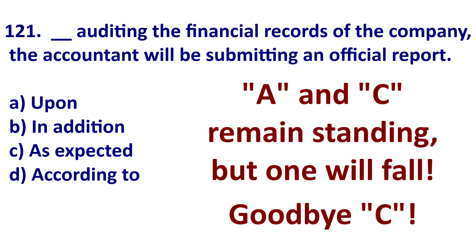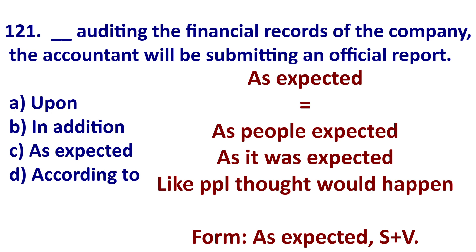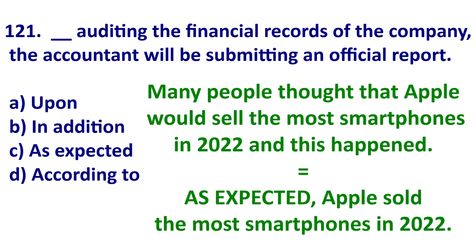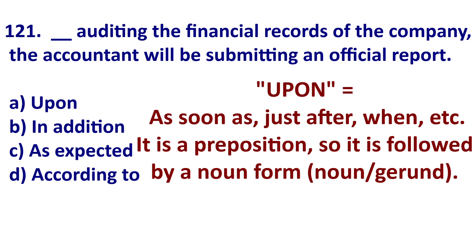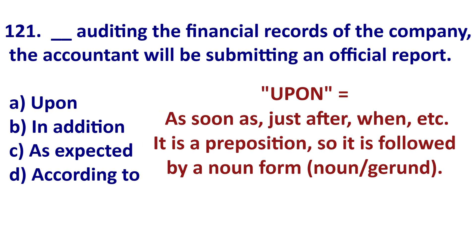Now eliminate C — 'as expected.' This means as many people expect or as it was expected, and you use it as: as expected comma subject verb. Example: many people thought Apple would sell the most smartphones in 2022, and it happened — so as expected, Apple sold the most smartphones in 2022. In the question, there is no comma after 'as expected' and no subject-verb following it, so eliminate C.